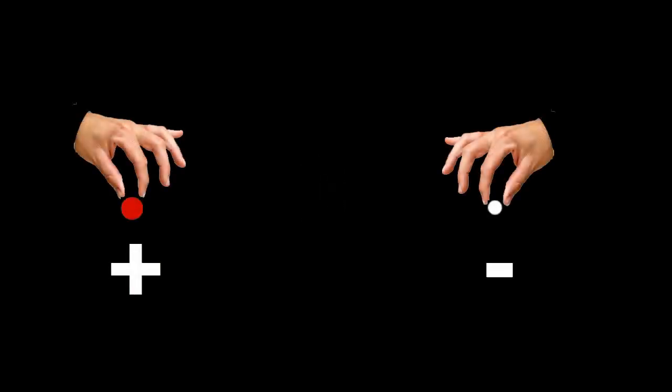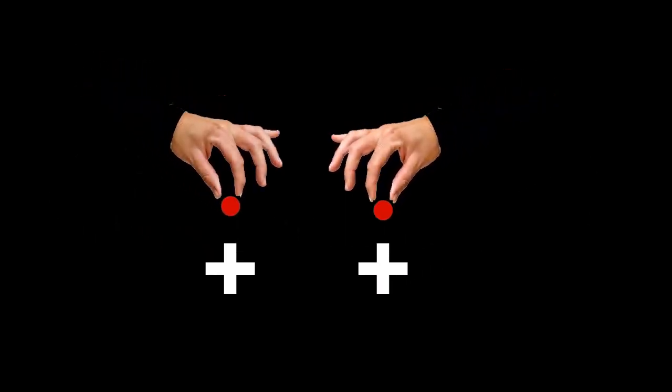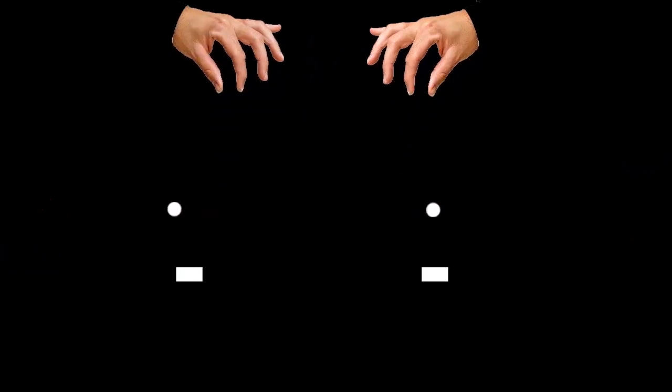Doing more experiments, scientists discovered some simple rules. When we place opposite charges together — that is, a positive with a negative — they attract each other. Placing two like charges together, that is, two positives together or two negatives together, created a repulsive electric force between them, like the hair standing on end situation. We now know why the hair strands repel each other — they carry the same charge. In summary, we can say that unlike charges attract and like charges repel. It's one of the universe's most important laws.